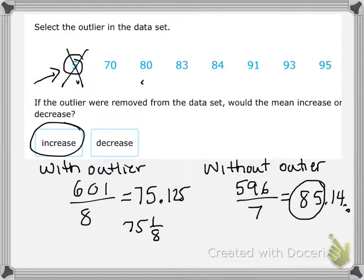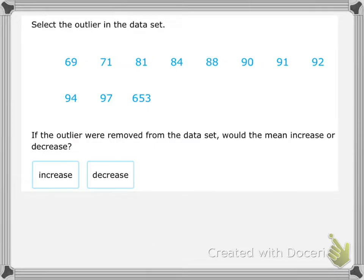Let's take a look at another example. All right, so we have our numbers listed in least to greatest order. As I'm looking at the lower numbers, 69 is pretty close to 71. So 69 is not the outlier. However, on the higher end, 653 is really far away from 97 and 94. So 653 is our outlier. And again,